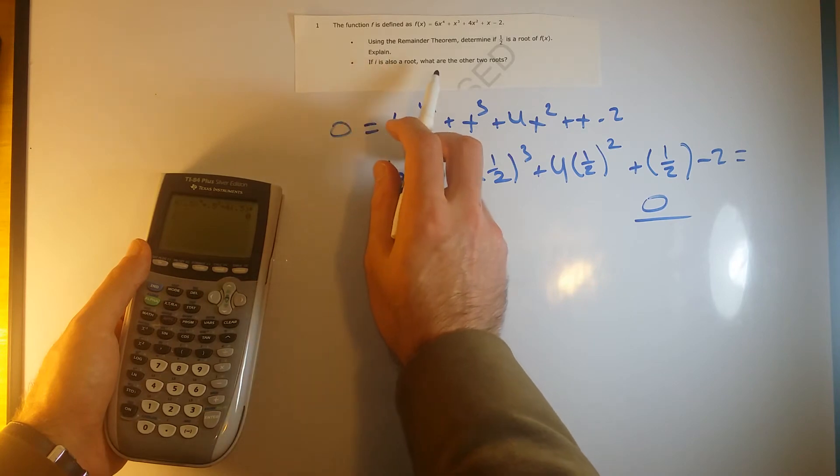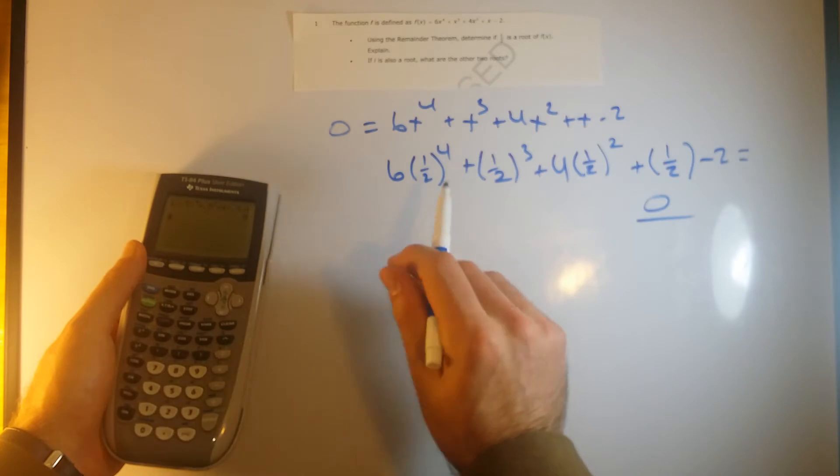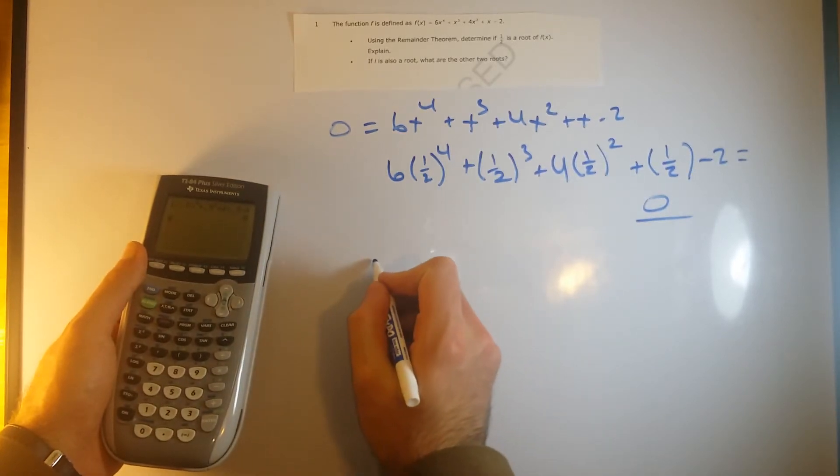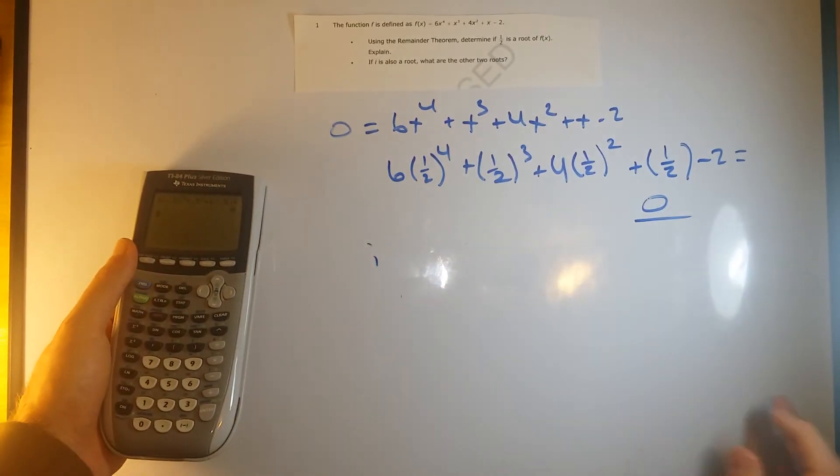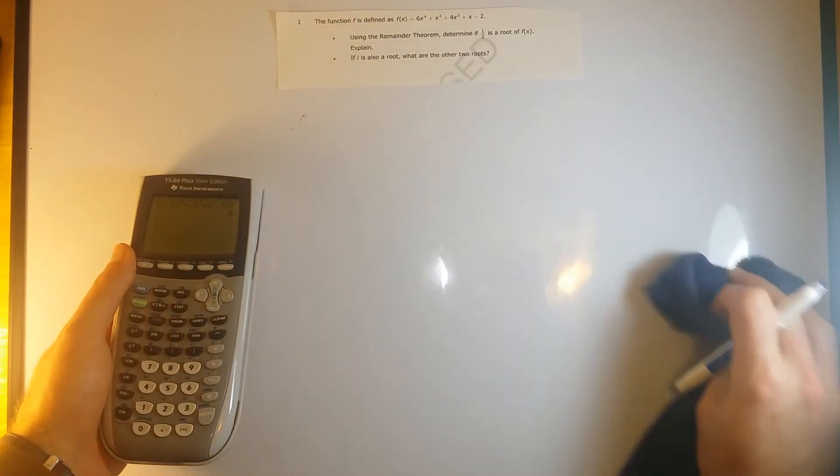So if i is also a root, what are the other two roots? If we know i is, remember i is just, I'll just erase this now because we did the first part, so we said yes, 1 half was a root.